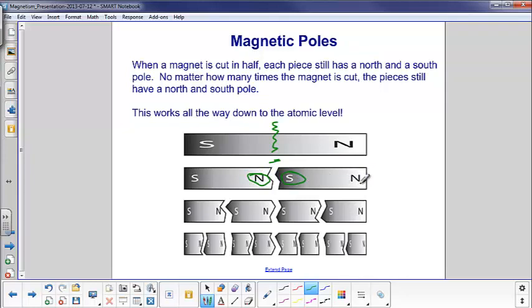Okay, let's cut it again. What happens? Same thing. Each individual piece has a south and a north pole. This works all the way down to the atomic level. You cannot cut magnets and keep cutting them and hoping at some point you'll just get a north or a south pole. Whatever you have physically will still have both poles.